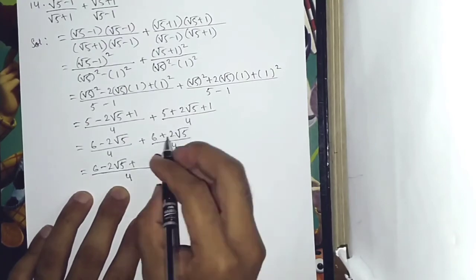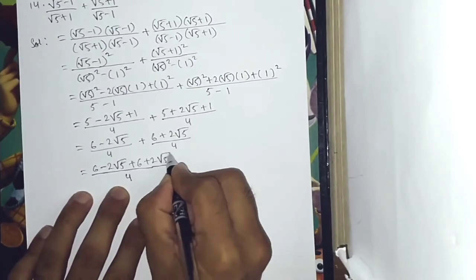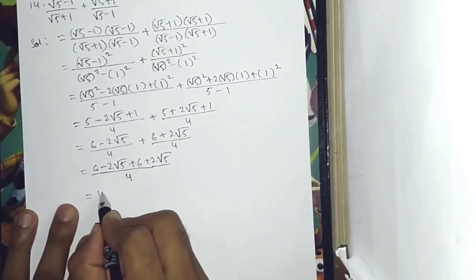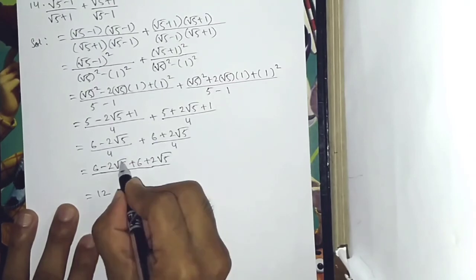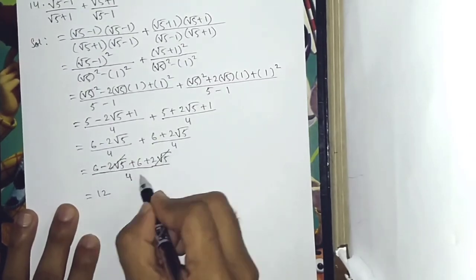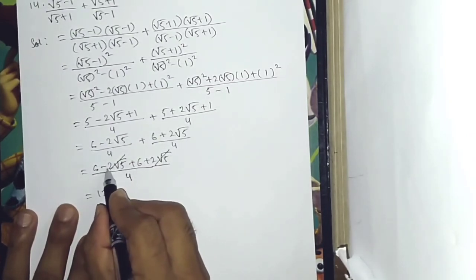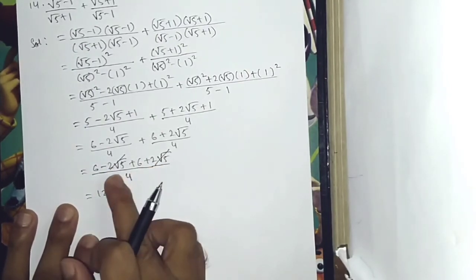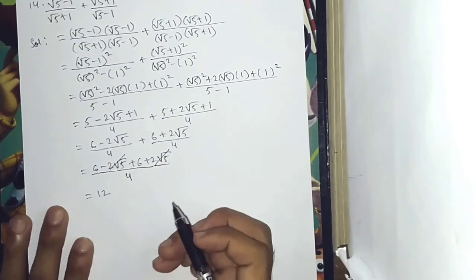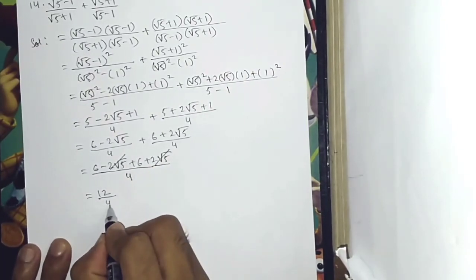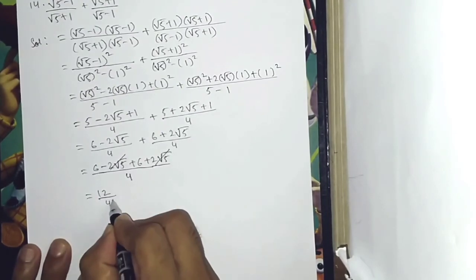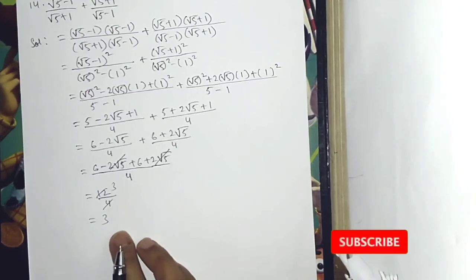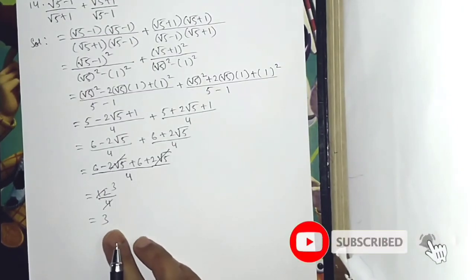Adding the two fractions: 6 minus 2 root 5 plus 6 plus 2 root 5, the root 5 terms cancel to zero, giving 12 divided by 4, which equals 3. So the answer is 3.